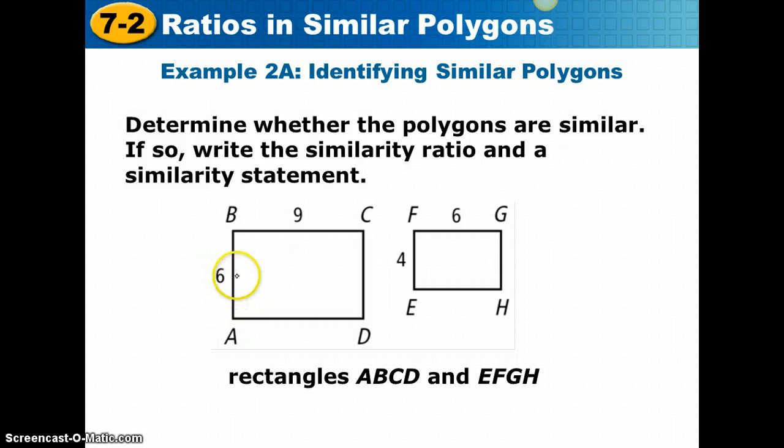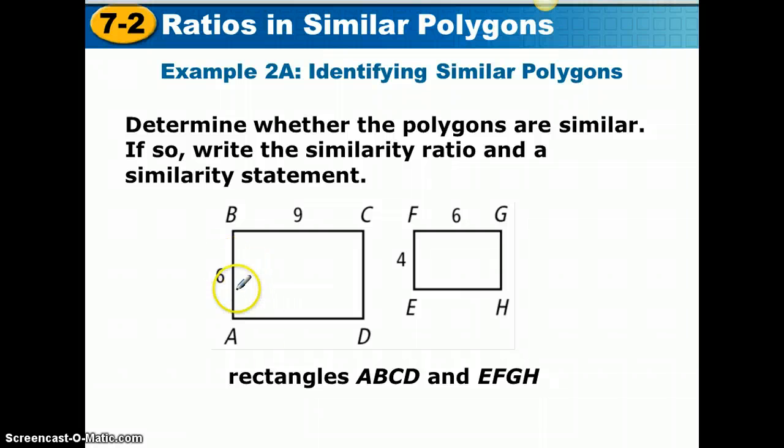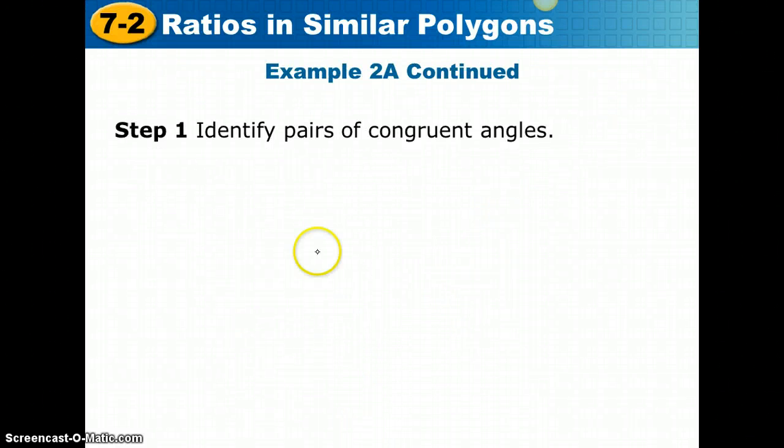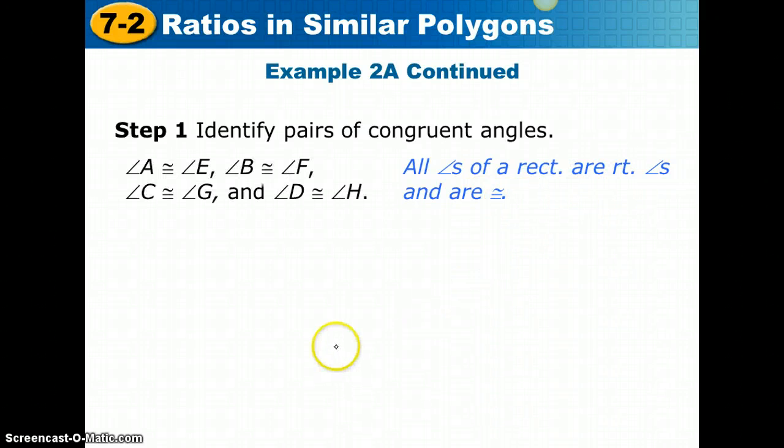Remember that in a rectangle, all four angles are right angles. All four angles here would correspond to all four right angles here, so corresponding angles are congruent. All angles of a rectangle are right angles and are congruent. So we can say A is congruent to E, B is congruent to F, C is congruent to G, and D is congruent to H.